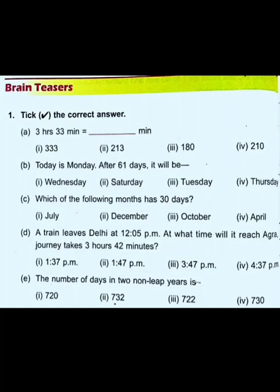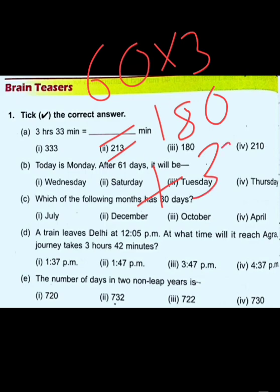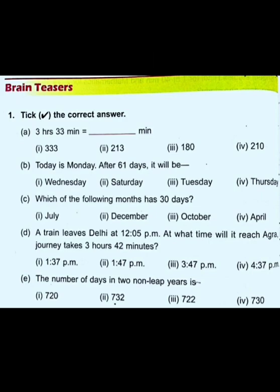Good morning students, today we are starting our brain teaser of unit 8. In question number one, part A: 3 hours 33 minutes is equal to how many minutes? We know one hour equals 60 minutes, so 60 multiplied by 3 gives 180. Then 180 plus 33 minutes gives 213 minutes. So option number two is correct.